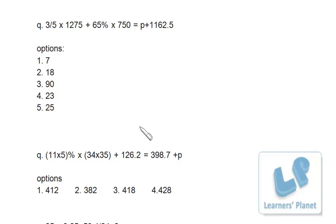This first one: 3/5 × 1275 + 65% × 750 = p+1162.5. Options are given. Since all the options are integral values and there is no 'none of these', you can do this problem very easily. The expression is also very simple, no approximation required. First, make it very simple: 65% is 65/100, so the zero is cancelled. Then we're left with 75/10.